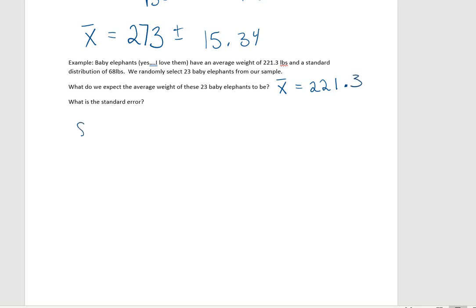Now, what's the standard error? Well, we don't expect them to be exactly the same as our population, but we expect them to be pretty close. So for our standard error, that's going to be 68 divided by the square root of 23. And again, let's just go ahead and round that to four decimal places. So what we end up getting is 14.18. So again, the verbal interpretation of this is that if we take 23 randomly sampled babies from our population, we expect the average of their weights to be the same as the population, so about 221.3, and we expect that to be off by 14.18 pounds.